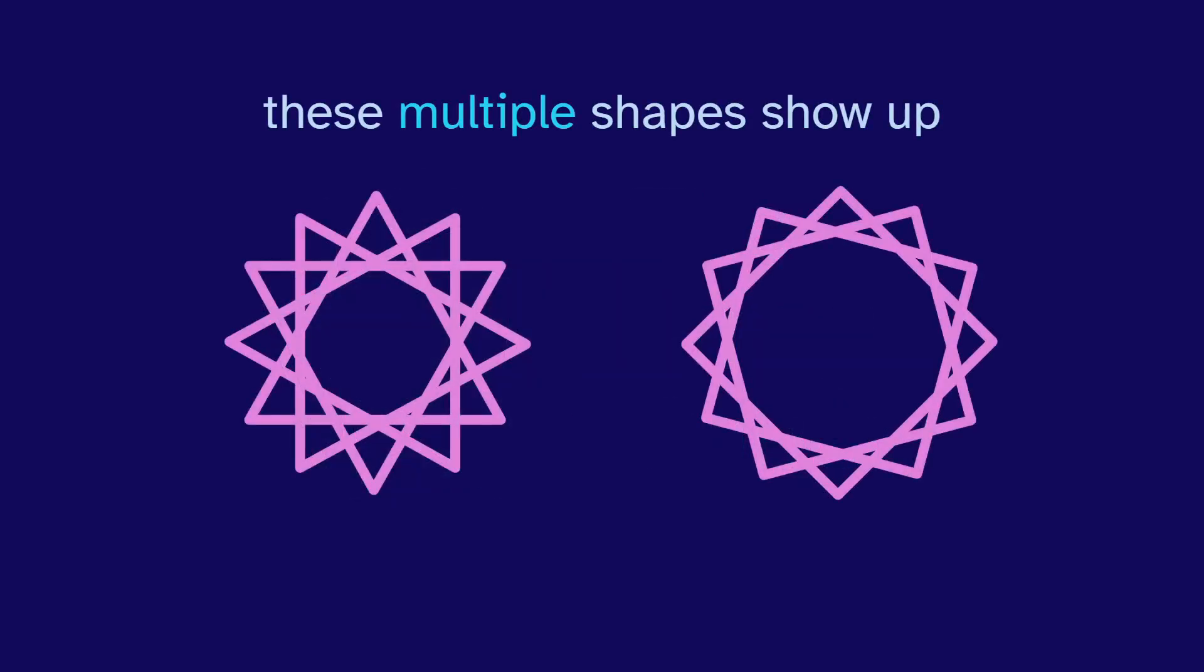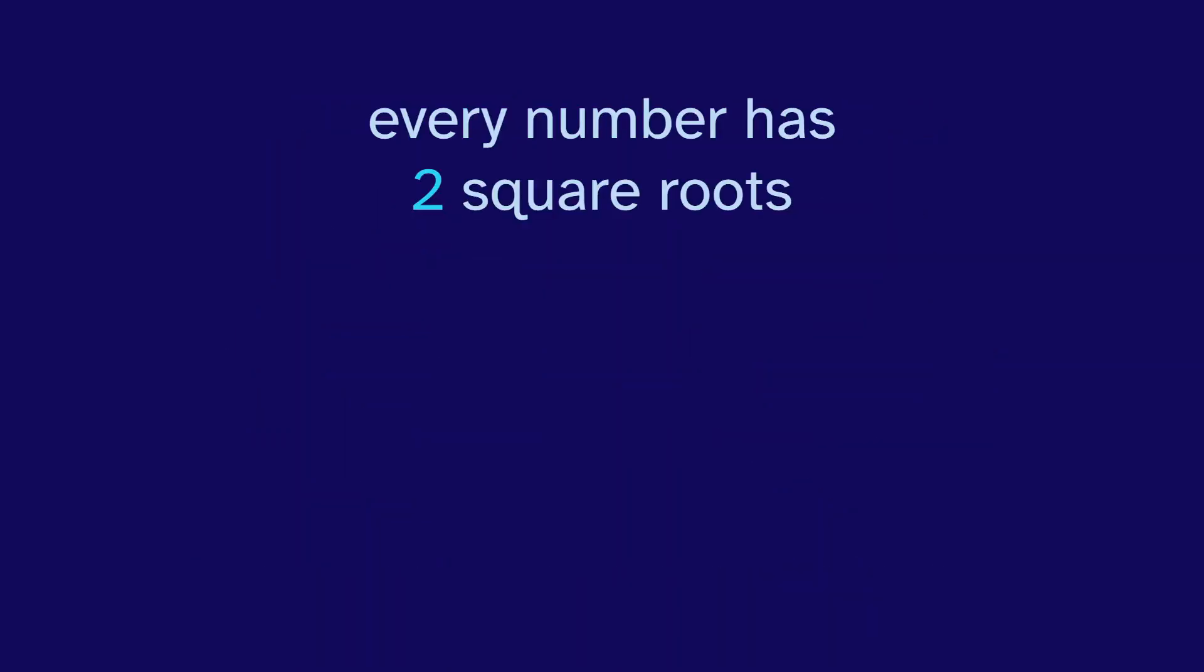These multiple shapes show up because numbers have multiple roots. Every number has two square roots. That's why we write this plus and minus sign. But also, every number has three cube roots, and four fourth roots. And this continues. In general, every number has n nth roots.